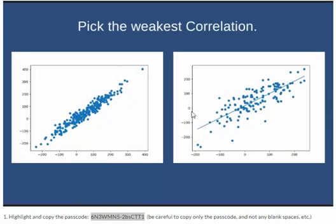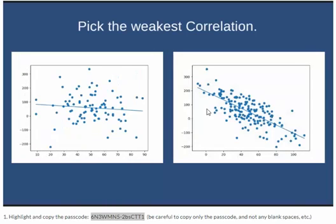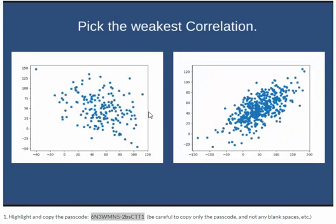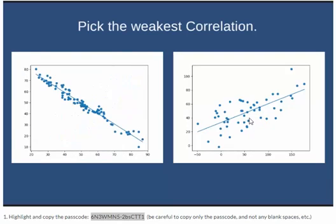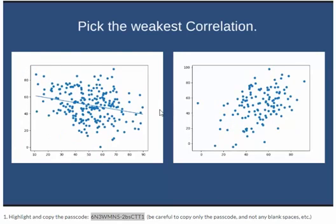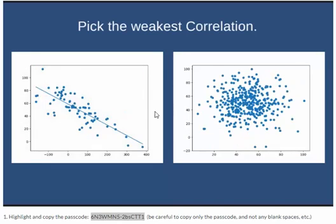I'm going to quickly go through here and select the correlation that is weakest — where the scatter plot most looks like a cloud of dots.